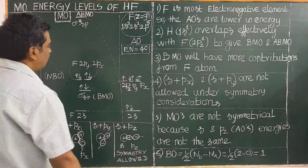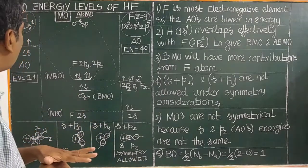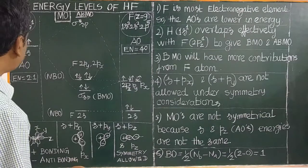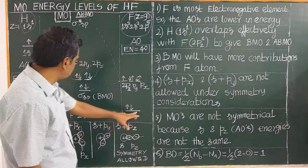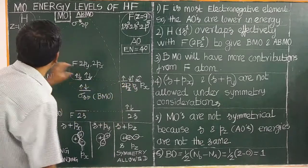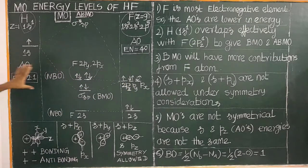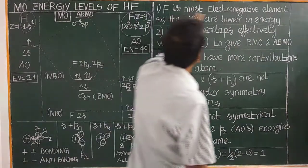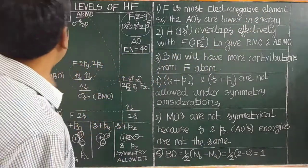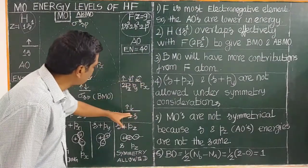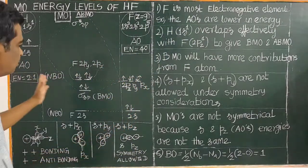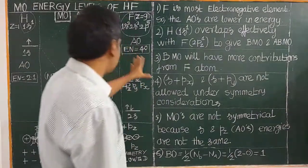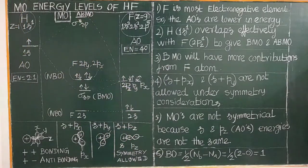The molecular orbitals are formed by the atomic orbitals of hydrogen and fluorine. First, you can see that we have 2s, which is non-bonding. The first key point is the electronegativity of fluorine — fluorine is the most electronegative element, more electronegative than hydrogen. Therefore, the atomic orbitals of fluorine are lower in energy compared to hydrogen, making them more stable.